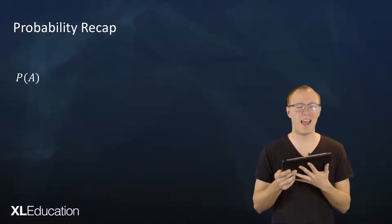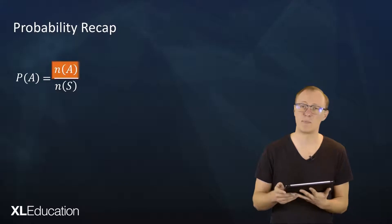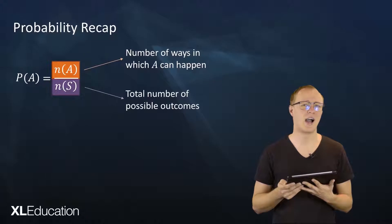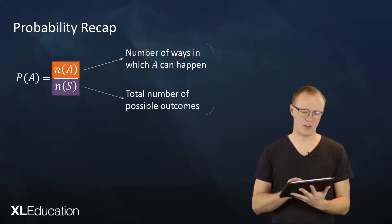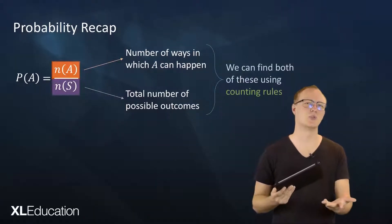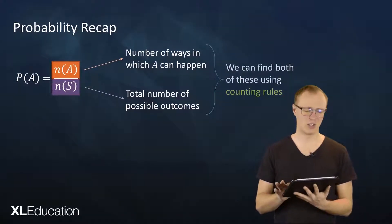Before we get to applying counting principles we first have to remember how to calculate probabilities. The probability of an event A is defined as the number of ways in which A can happen divided by the total number of possible outcomes, which we can also call the size of the sample space. We can find both of these using counting rules given an appropriate question to apply it to.